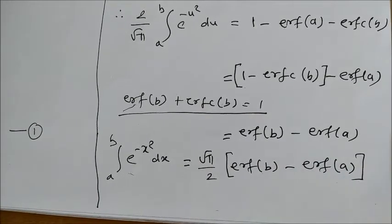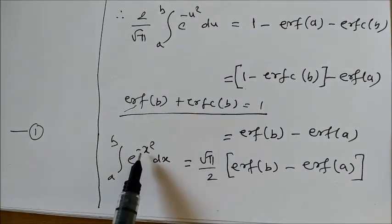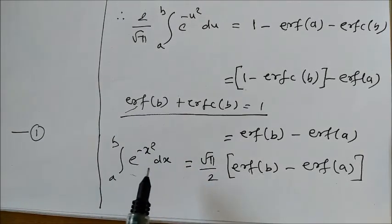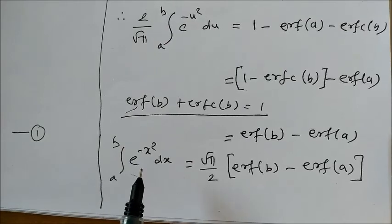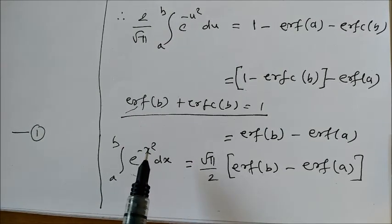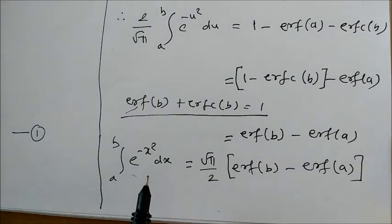Actually here you have u square du, but change of variable is allowed in definite integration. So we are simply changing the name from u to x. I hope you have understood this problem. Thank you.